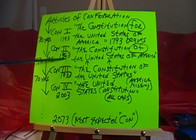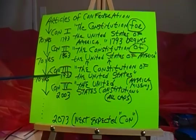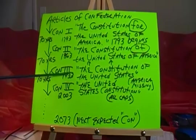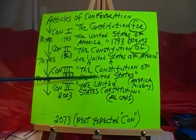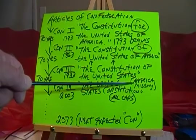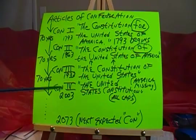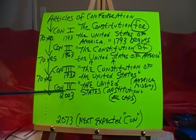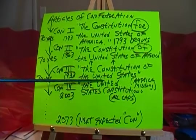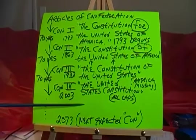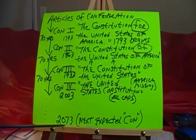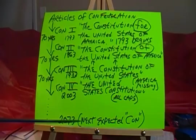We add 70 to 1863 and it brings you down to 1933, where the third con takes place — that is the Constitution of the United States. Notice America is missing in the third con. Now the one that I believe we're in now is what I call the fourth con, which would be the United States Constitution, and it appears they're in all capitals. So when is the next one? If this cycle is true, and it certainly seems to be, it's the year 2073 — that's the next expected con.